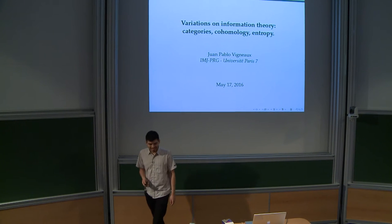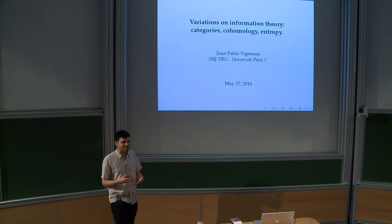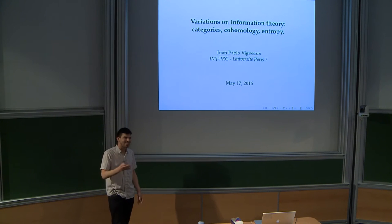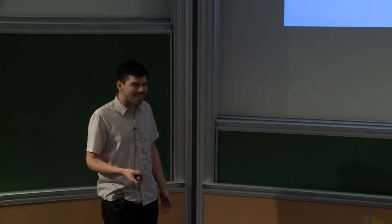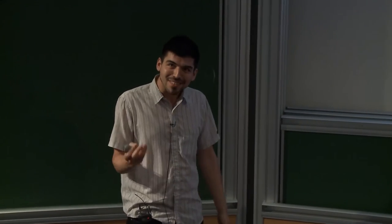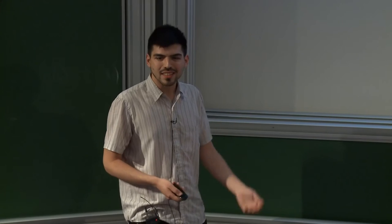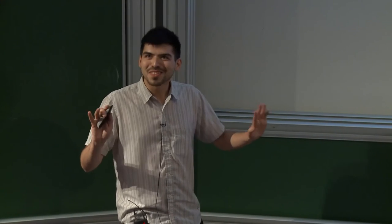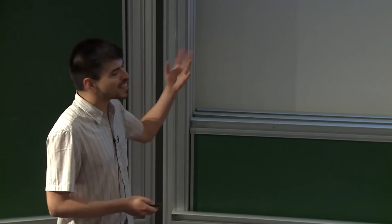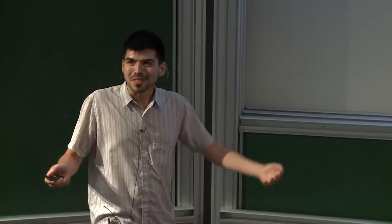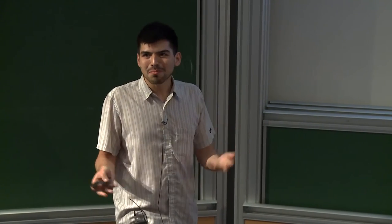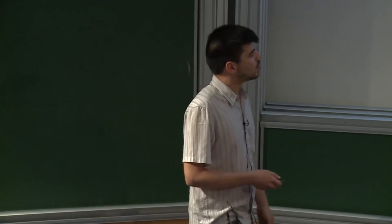Hello everybody. To contribute to the links with geometry, quantum gravity, and related topics, I will talk about some connections to category theory and cohomology theories with probability, and particularly with information theory. I will introduce this. The plan is: I will present the characters — what is cohomology, what is information — then the part about observables and probabilities, and then I will try to explain how all this is related to entropy.